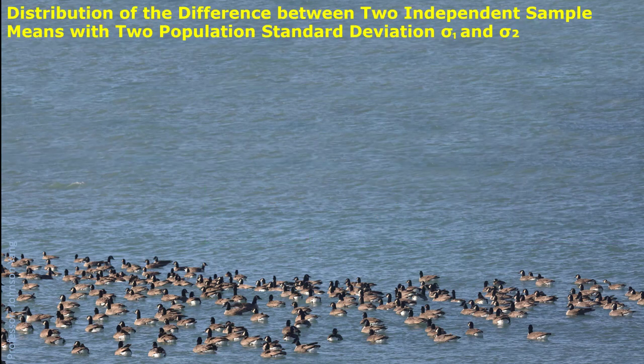The similar idea can be applied to two populations as well. When we consider two independent populations, we randomly pick up one sample from each population. Then we have two independent samples. By using these two sample means, we can get some idea about the two population mean difference, so the sample mean difference is considered as a random variable.